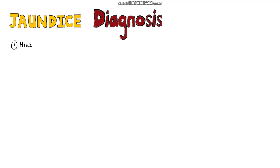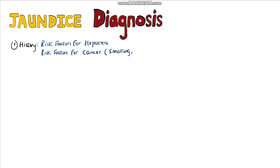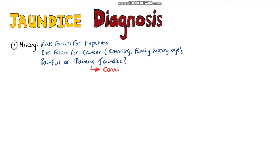When someone presents with jaundice, you would gather information from the history, including whether the jaundice is painful, risk factors for hepatitis, and risk factors for cancer such as smoking, family history, and age. Painless jaundice is much more correlated with cancer than painful jaundice. You may even be able to feel Courvoisier's sign, which is a palpable distension of the gallbladder in the setting of painless jaundice, implying a possible malignancy of the pancreas or gallbladder.